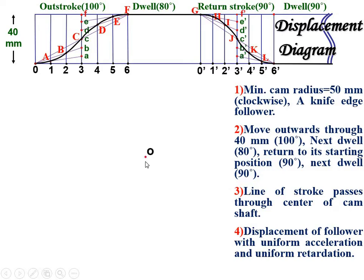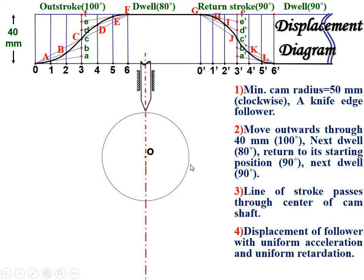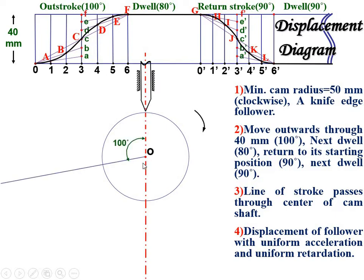Now for the cam profile. Randomly take one point O and draw the axis line through it, since no offset distance is given. The minimum cam radius is 50 mm, and a knife-edge follower is given. Draw the knife-edge follower on the center line. Since the direction of cam rotation is not specified, assume clockwise direction, and mark all angles — out stroke, dwell, and return stroke — in the anticlockwise direction from the reference line: first 100 degrees, then 80 degrees, then 90 degrees, leaving a remaining dwell of 90 degrees.